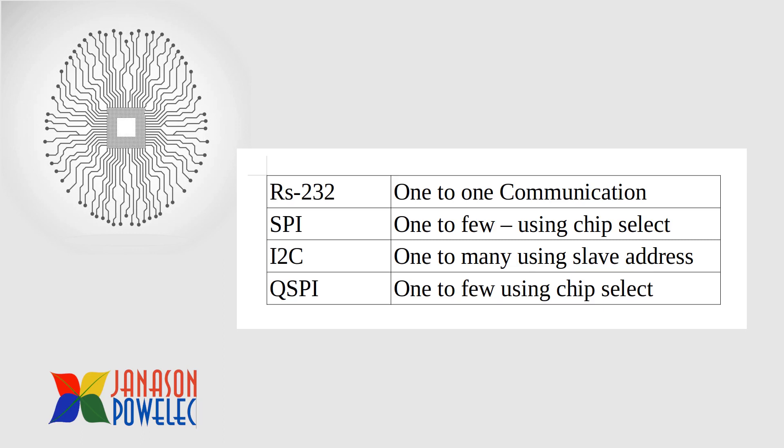I2C is one-to-many using slave address. It is only two-line communication but many devices can be connected using slave address. QSPI is similar to SPI — it is one-to-three using chip select. SPI, I2C, and QSPI can work over very short distances, mostly within the PCB itself, but RS-232 can transfer data over a little more distance, maybe one or two meters, like printers. Mainly RS-232 has been developed for printer communication.